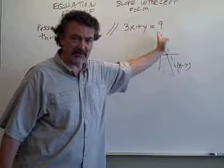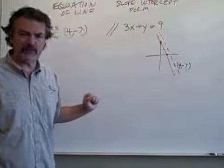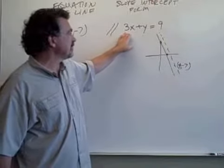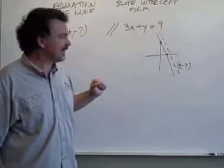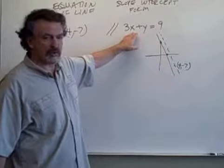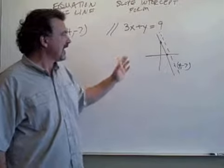There's a line. I drew it as a dotted line here. There's a line that we don't know yet that passes through the point 4, negative 7 and is parallel to the line defined by 3x plus y equals 9. Now, I drew in the line that would correspond to the equation 3x plus y equals 9.